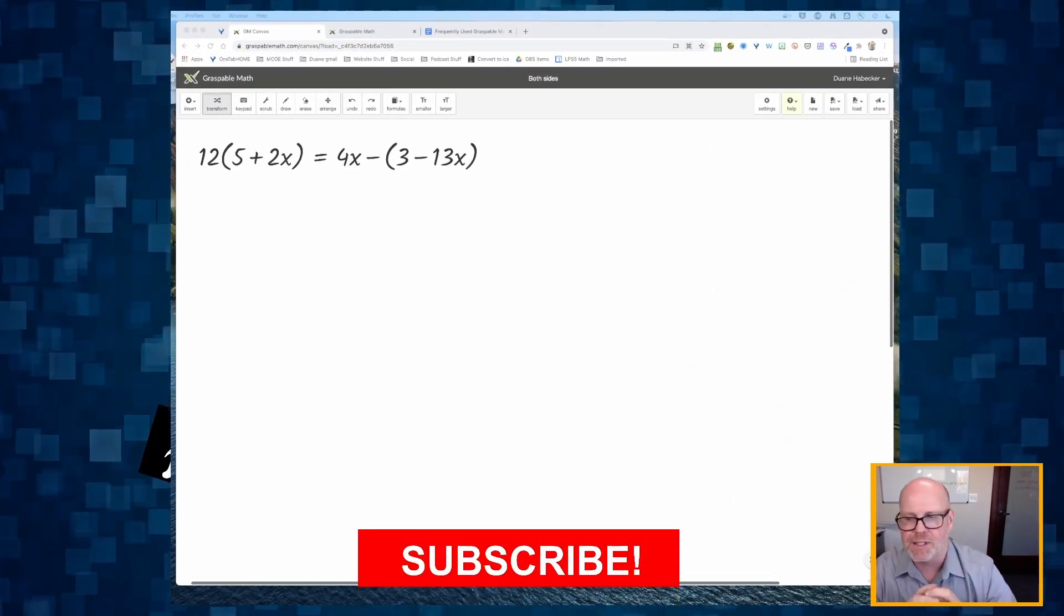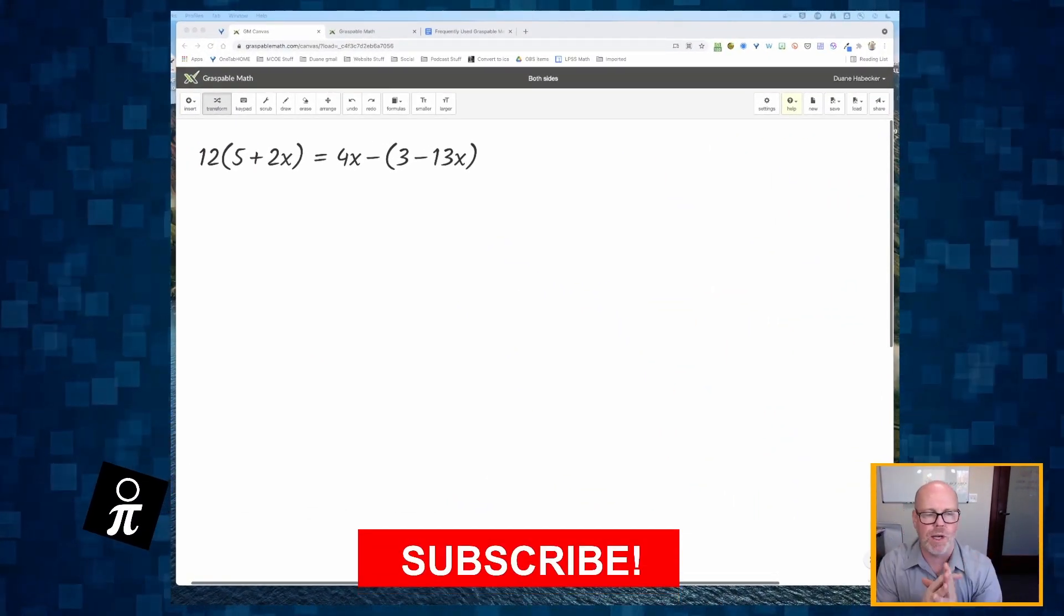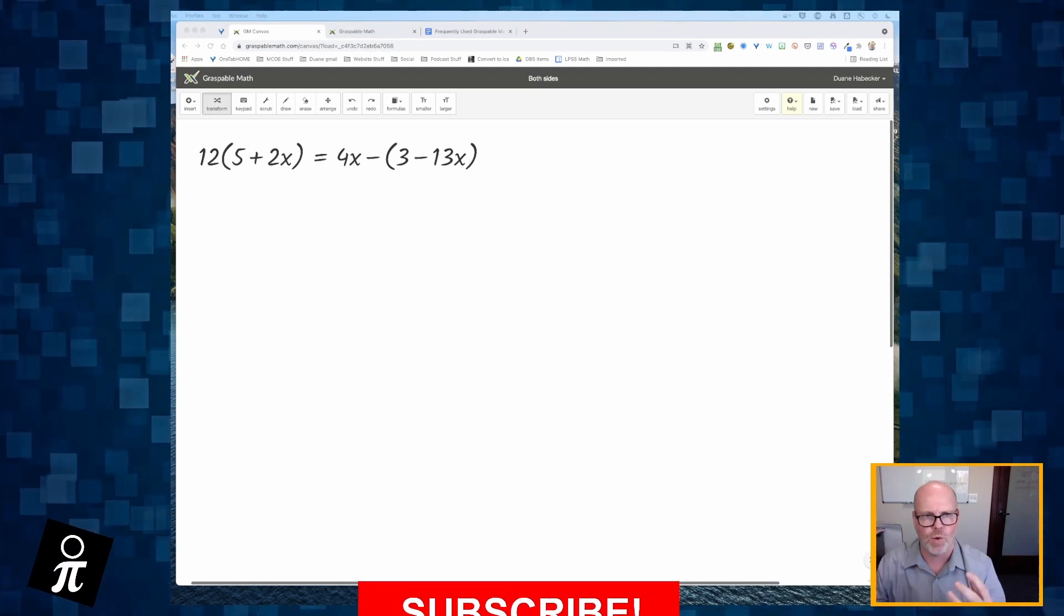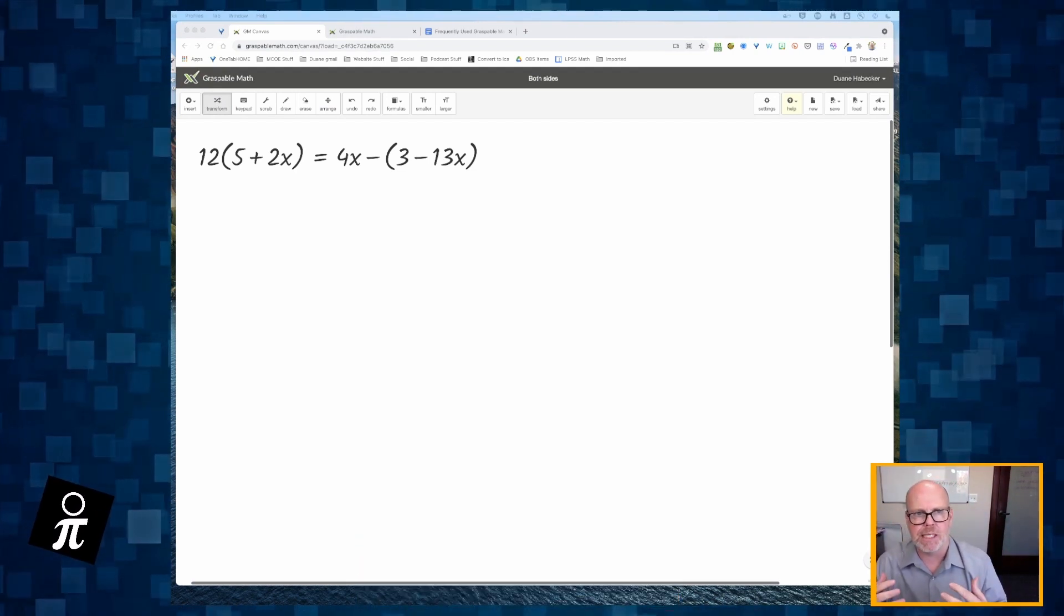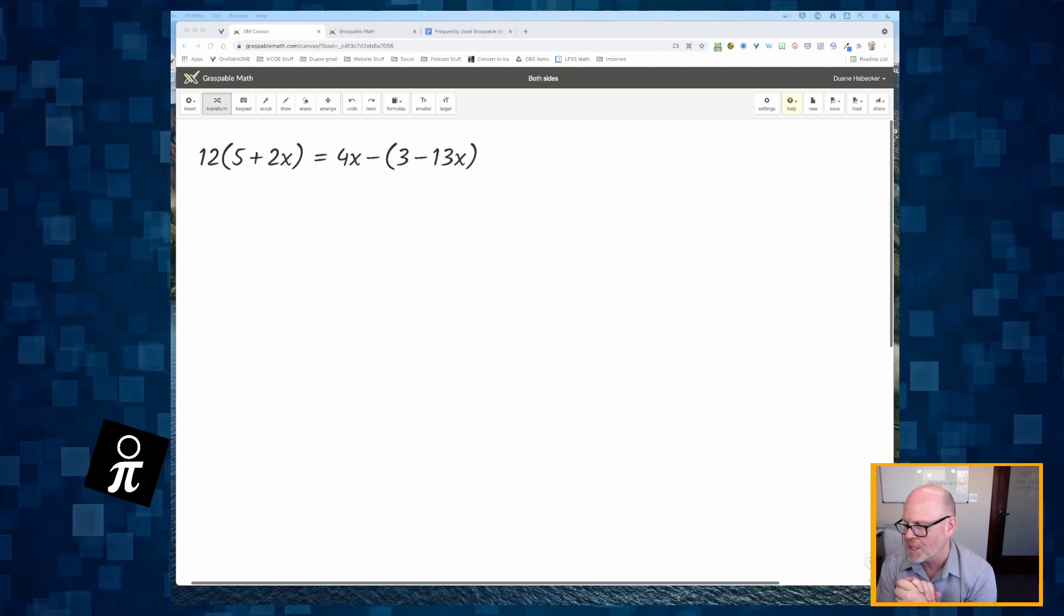And so we're going to start with this equation 12 times the quantity 5 plus 2x is equal to 4x minus the quantity 3 minus 13x.